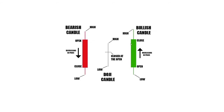A doji has no real body because the real body shows where the price moved from open to close. If it opened at five dollars and the high was five fifty and the low was four dollars, it ended up closing right back at five dollars. Doji candles can give you insight into price action — maybe it's contested between buyers and sellers. When buyers come in, the sellers pull it back down, and vice versa, because buying and selling makes the price go up and down.